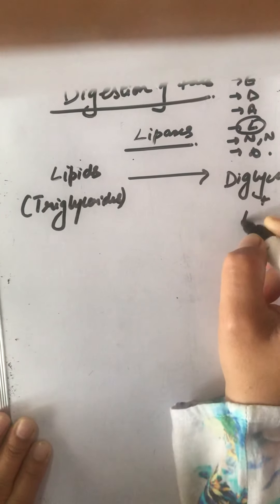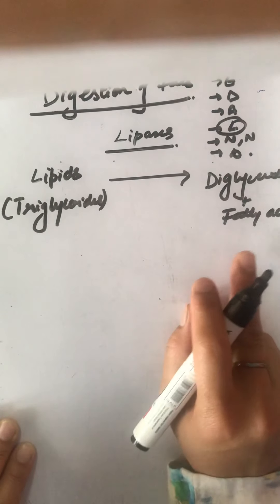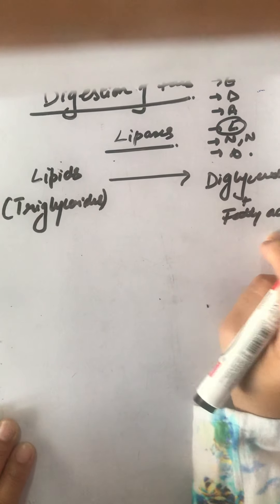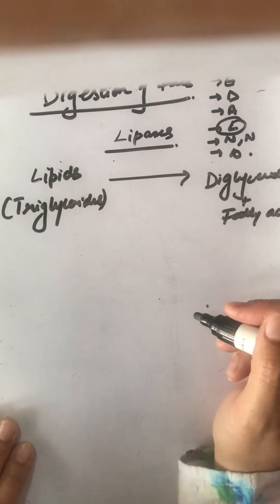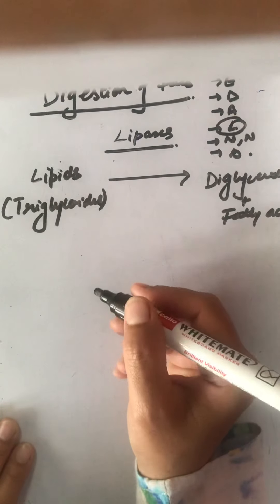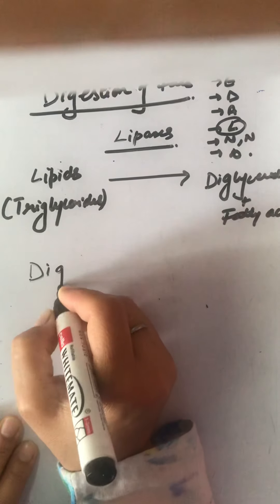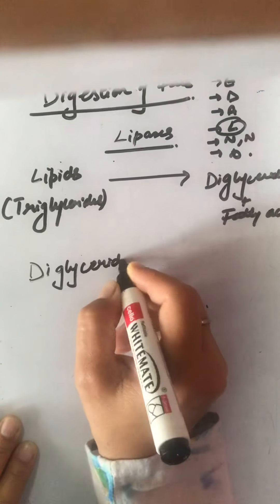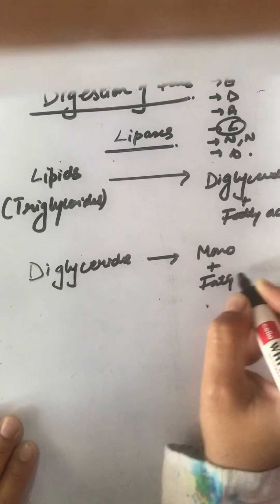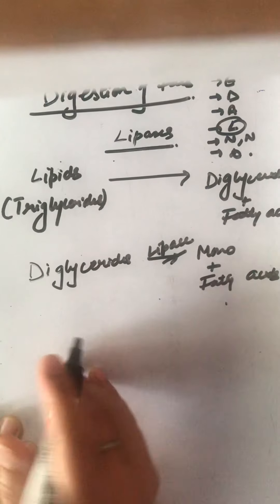These diglycerides and fatty acids are acted upon again by lipase, further converting them into fatty acids and glycerol, along with the formation of monoglycerides. The lipase of the intestinal juice converts diglycerides into monoglycerides along with fatty acids.